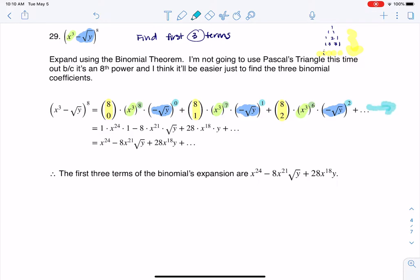I could keep going here. The only reason I stopped was because the directions said get the first three terms. I could have continued to decrease the powers on x cubed and increase the powers on negative root y, using the rest of the binomial coefficients. But it said first three terms, so I'm going to call it.